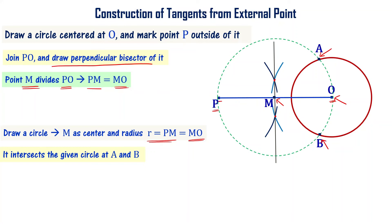Connect these two points to P. Now connect PA and PB. These two lines are tangents to the circle from point P.